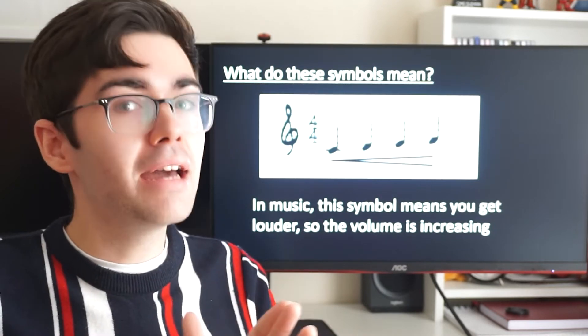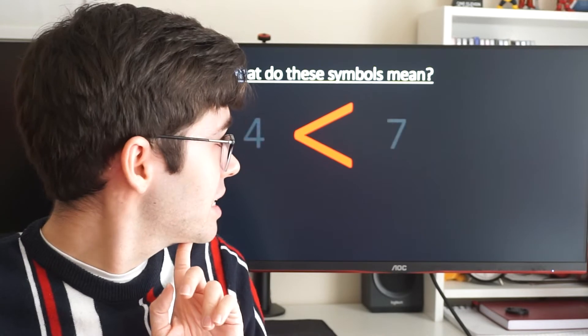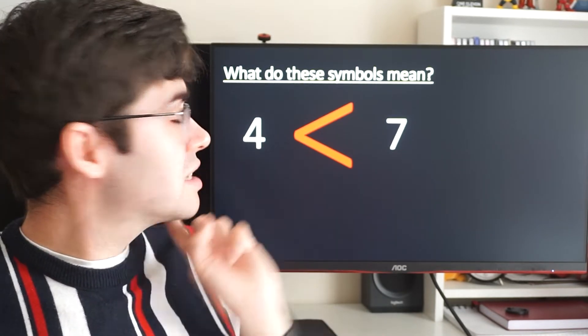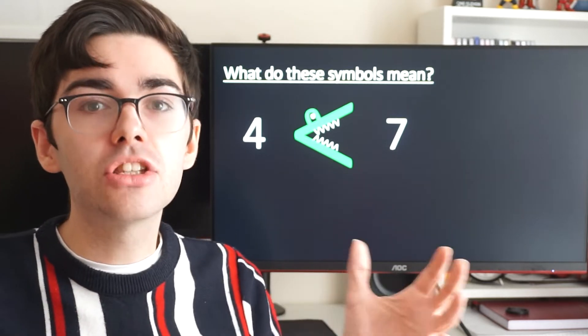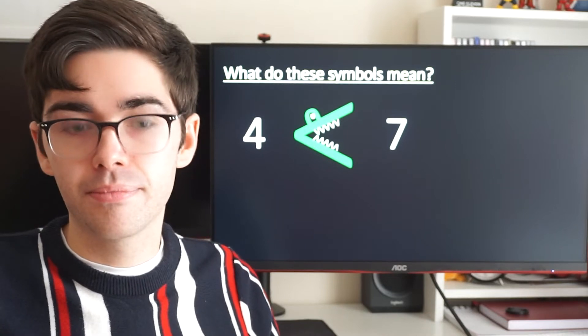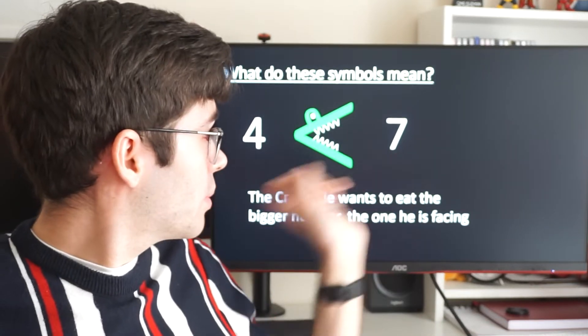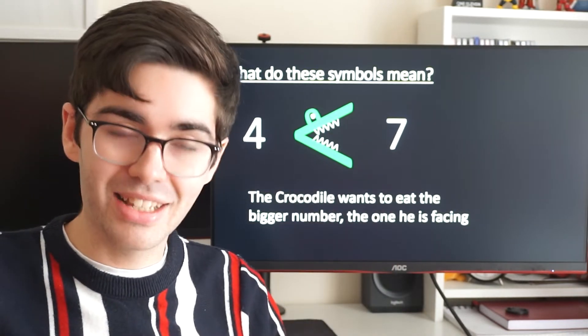Another thing that many of you may have seen in school is the crocodile method. So if we look at this again, 4 is less than 7, we can turn this symbol into a crocodile. Now the crocodile wants to eat the bigger number, so whichever one he is facing is the bigger number. 7 is the one he's facing, he wants to eat the 7, so 7 is bigger than 4. 7 is greater than 4 is what that tells us.